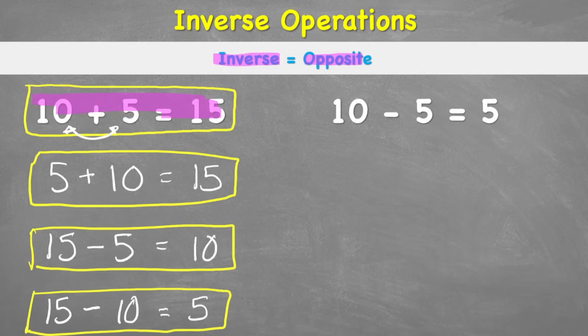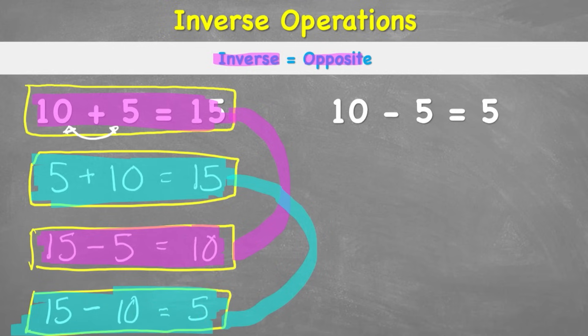We have 10 plus 5 equals 15, and we have its partner, its inverse, which is 15 minus 5 equals 10. They are linked, they're the inverse. And then the other number sentence for addition is 5 plus 10 equals 15. And then its number family inverse is 15 subtract 10 equals 5.